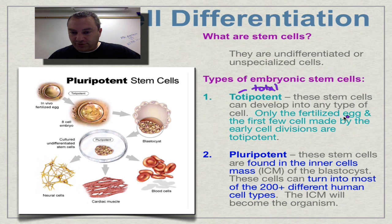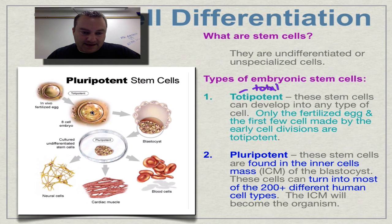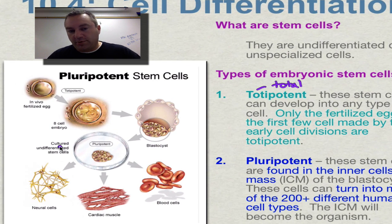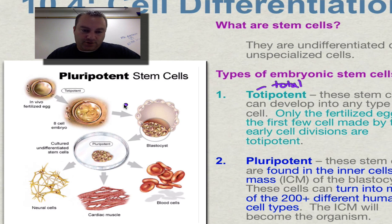We only find totipotent cells in the fertilized egg during the first few cell divisions. If you look at these eight cells right here, those are totipotent — totally potent, they can become anything.